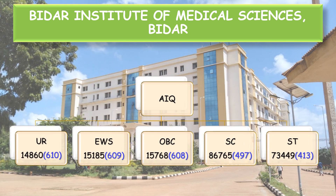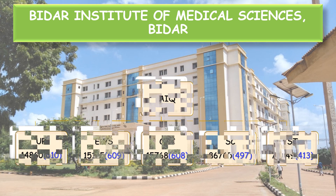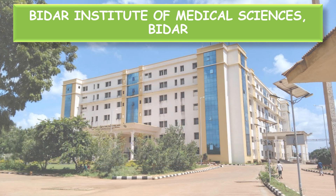All India Quota category-wise cutoffs: Unreserved — All India Rank 14,860 corresponding to NEET Score 610, EWS — 6109, OBC — 608, SC — 497, and ST — 413.